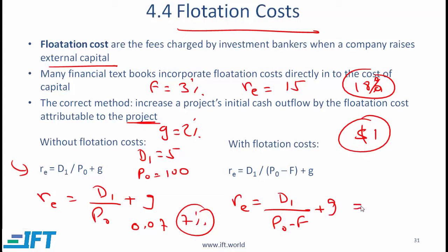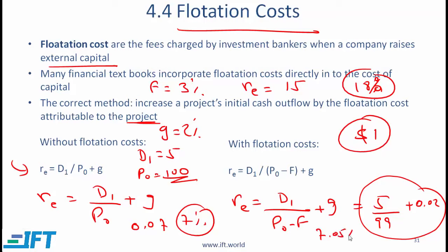To complete the calculation with the same $5 dividend, instead of dividing by 100 we divide by the net amount raised — 100 − 1 = 99 — and add the 2% growth rate. This gives a cost of equity of 7.05%. So when we consider flotation costs, the cost of equity clearly increases. The key point is that we subtract the flotation cost from the issue price, since it is paid up front, making it theoretically appropriate to reduce the proceeds of the stock issue accordingly.